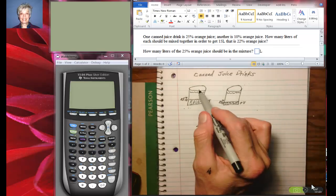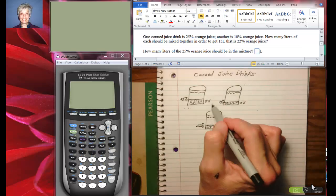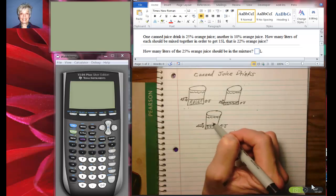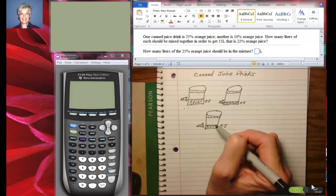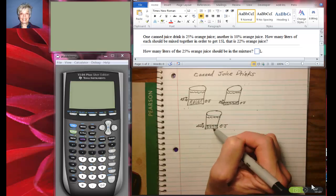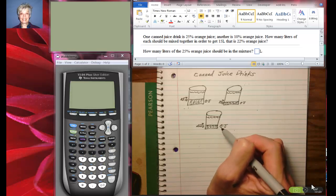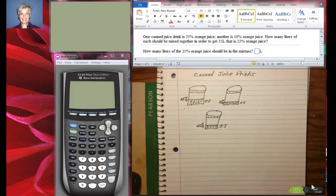Anyway, what we're going to be doing is we're going to be pouring this and this, some of this and some of this in here in order to get a 22% orange juice mix where 22% of the total liquid is orange juice and the rest is something else.